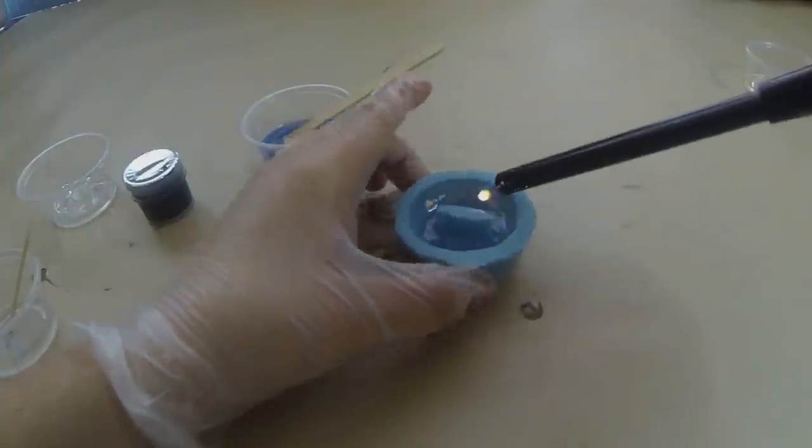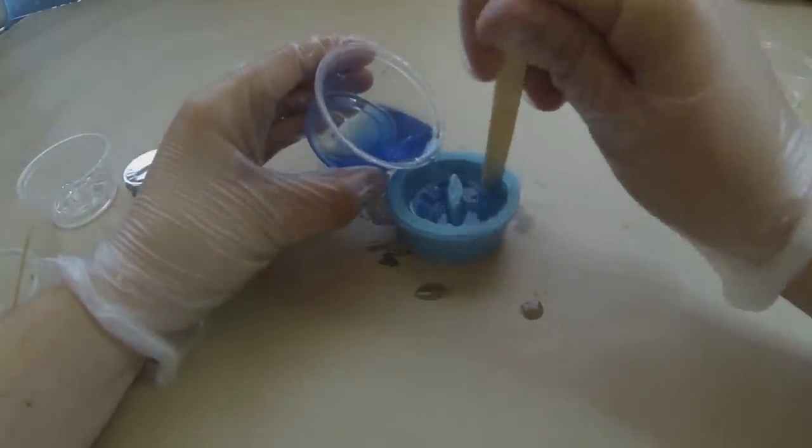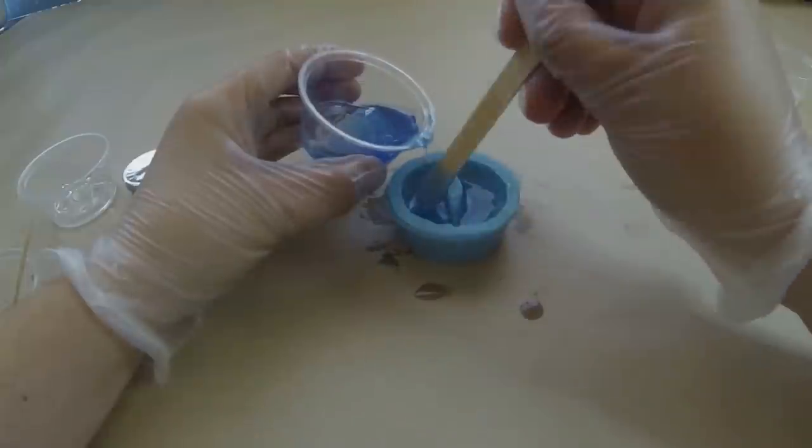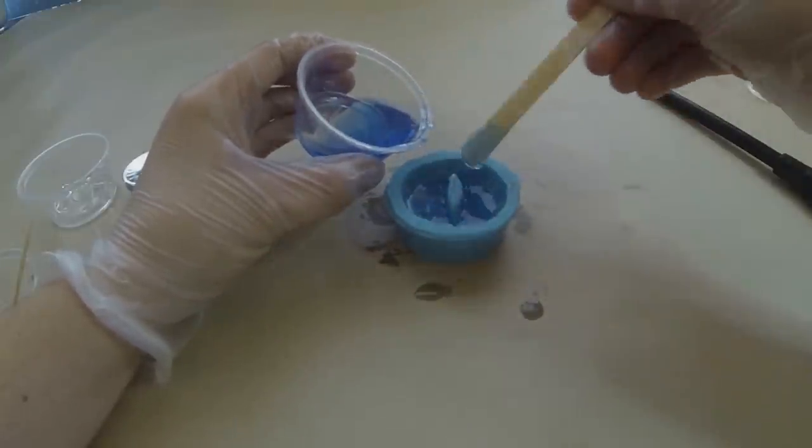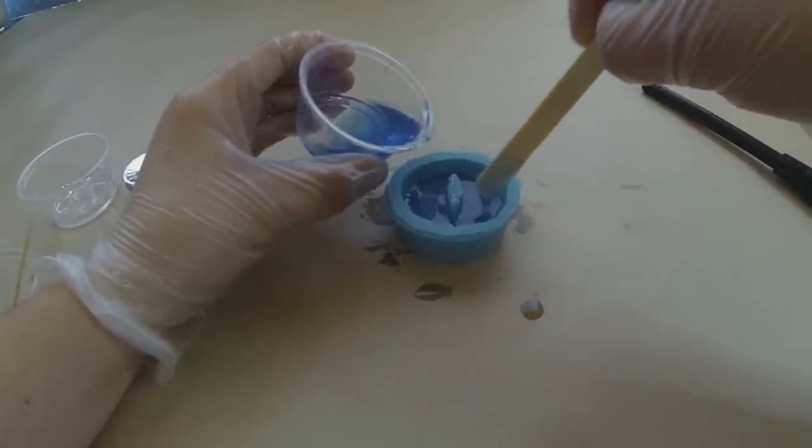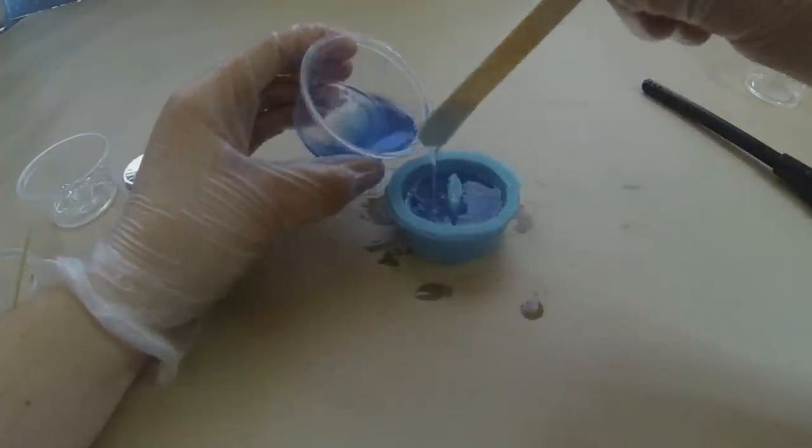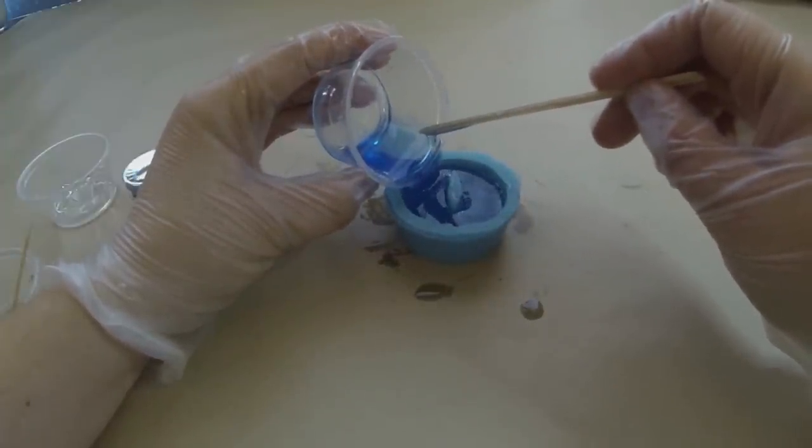And then just slowly scooping them in. I wasn't too concerned about the bubbles on this one, since this is an open face mold. A lot of those bubbles would rise to the surface and be able to escape. I was more concerned about the other eye, because bubbles could get easily trapped, and I guess we'll see how that one turns out in a bit.